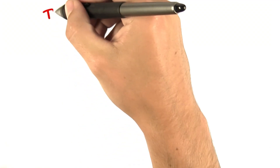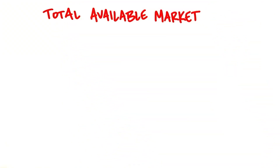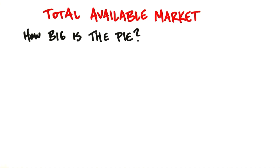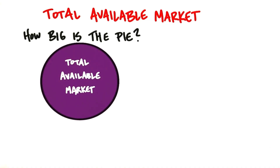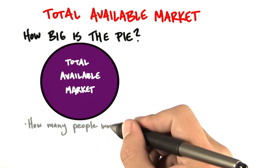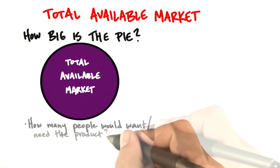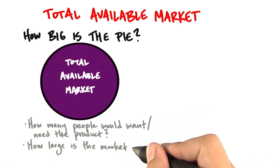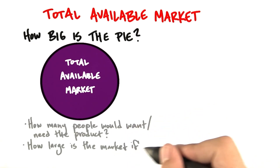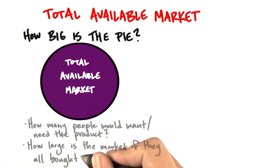The first word we want to think about is something called total available market. I like to think of total available market as a pie — it's the entire pie. Total available market says, how many people or companies or whatever your unit of sale is would want or need this product, and how large is the market in dollars or units if they all bought?